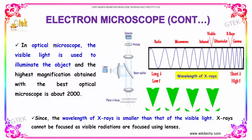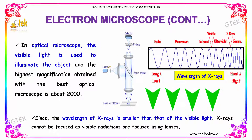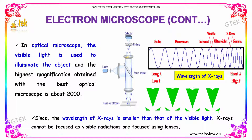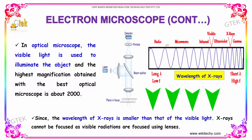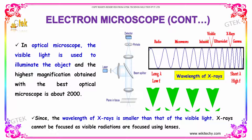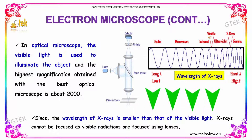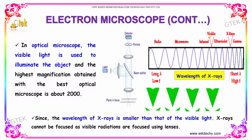In an optical microscope, visible light is used to illuminate the object. The highest magnification obtained with the best optical microscope is about 2000.